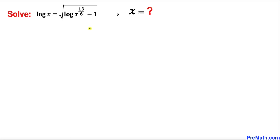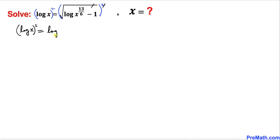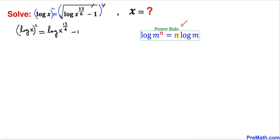Let's go ahead and get started with the solution. Since we are dealing with the square root, let's undo this square root by taking the square on both sides of this equation. Our equation is then going to become on the left hand side log of x whole power 2, equals to on the right hand side log of x power 13 over 6 minus 1, since the square and square root undo each other.